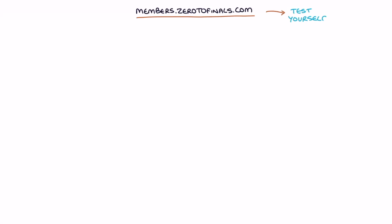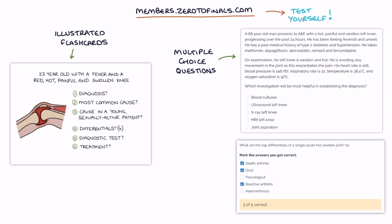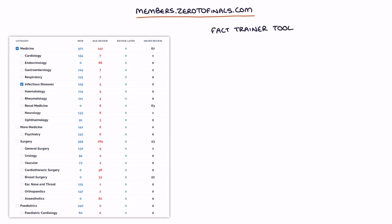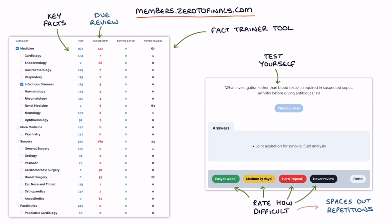Head over to members.zerotofinals.com to test yourself on how much you understood and remembered from this video. The members site contains illustrated flashcards, multiple choice questions, and short answer questions designed to perfectly complement the Zero to Finals resources. It also features an Anki-like fact trainer tool which you can use to train your knowledge on key facts for your medical exams. You test yourself on the fact, then rate how difficult you found it. The site spaces out your repetitions and tells you when you're due to review it again, helping ensure facts stay in your long-term memory. A link to the member's site is in the video description.